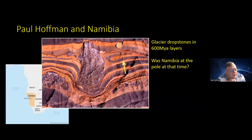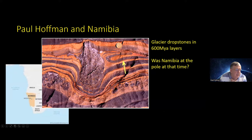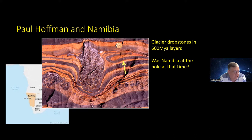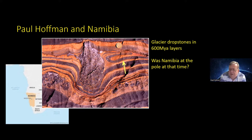So it was a huge surprise to Paul Hoffman, the real hero of this story, when exploring in the Namibian desert and finding a dropstone — quite a large one with a coin for scale — that had sunk into ancient sediment layers. He dated these rocks to 600 million years ago, which was interesting. But what was really surprising was that this was in southwest Africa — a hot desert country today — yet here was clear evidence of glaciers operating there 600 million years ago.